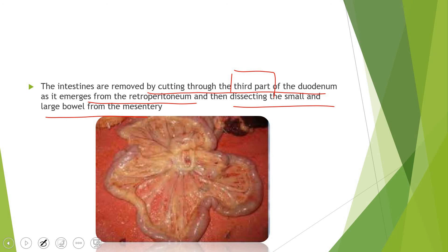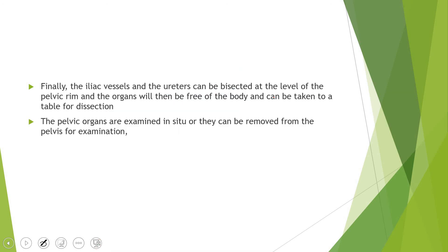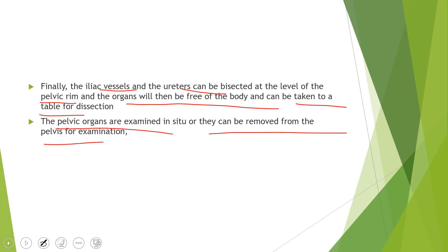You don't need to remember every cut site — just have a global picture in mind, as standard textbooks like Simpson's and Amir Sadim's have skipped this topic. Finally, for the pelvic organs, the iliac vessels and ureters are bisected at the level of the pelvic brim, freeing the organs to be taken out on the table for dissection. Pelvic organs can also be examined in situ. That concludes the procedure of autopsy — next we look at artifacts, negative autopsy, and exhumation.